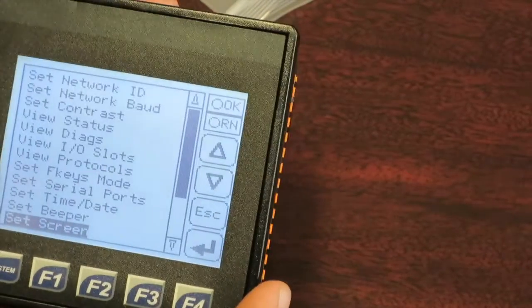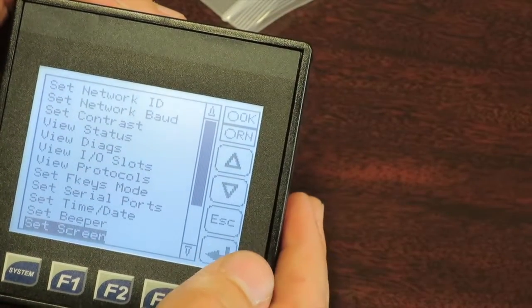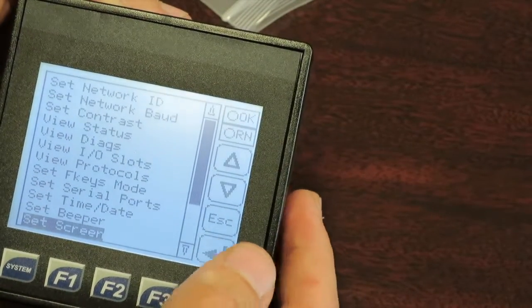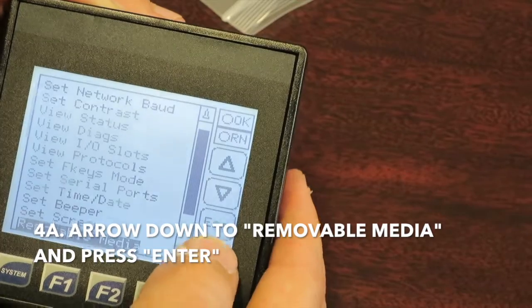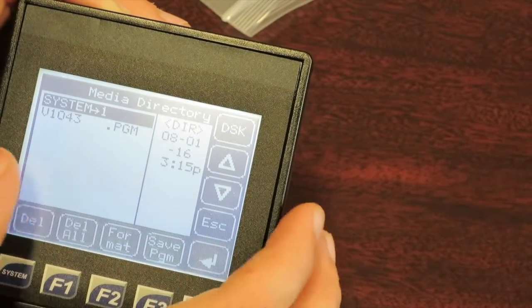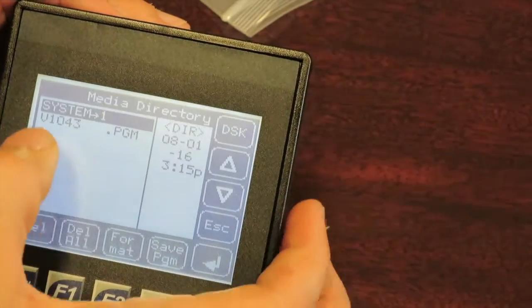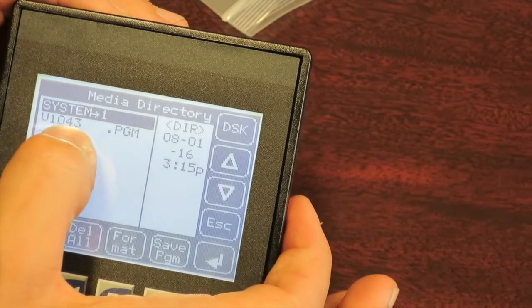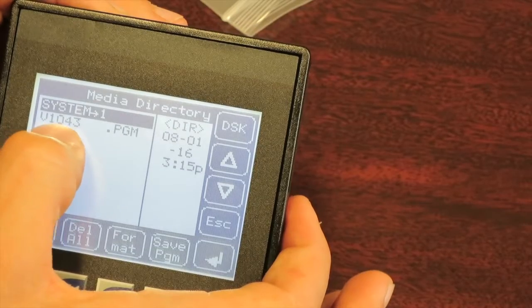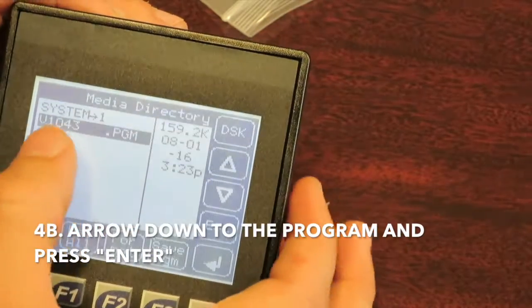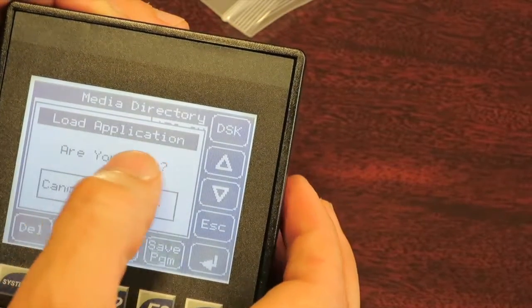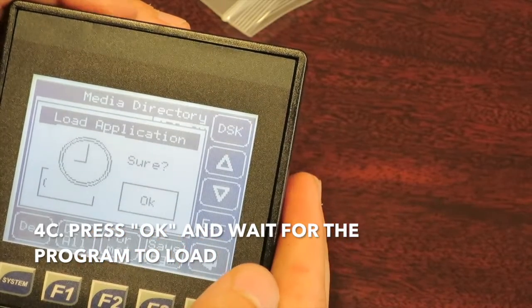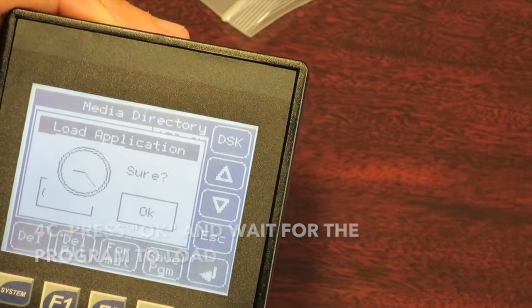Now, the reason I put that SD card in there is because I have to reload the program onto the PLC because I reset it since I removed the battery. So I am going to arrow down to removable media, which is the next one in this list. I'm going to press the enter button. And now I can see what is stored on that SD card. I want the latest program, which in this case is 1043. So I'm going to arrow down to 1043 and choose enter. It's going to say load application, are you sure? Press OK. A little time clock will come up as it loads the program.